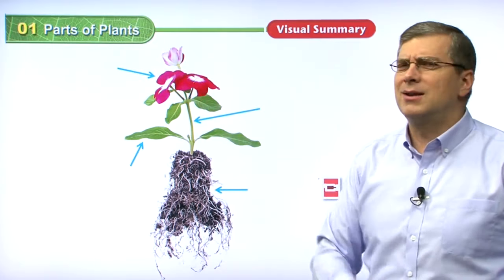Carrots are very good for you, so you should eat lots of carrots and other types of vegetables. Many types of vegetables are actually grown inside the ground and we take them out and eat the root of the plant. Let's go over the words we've discussed: root, stem, flower, plant, leaf, and fruit.